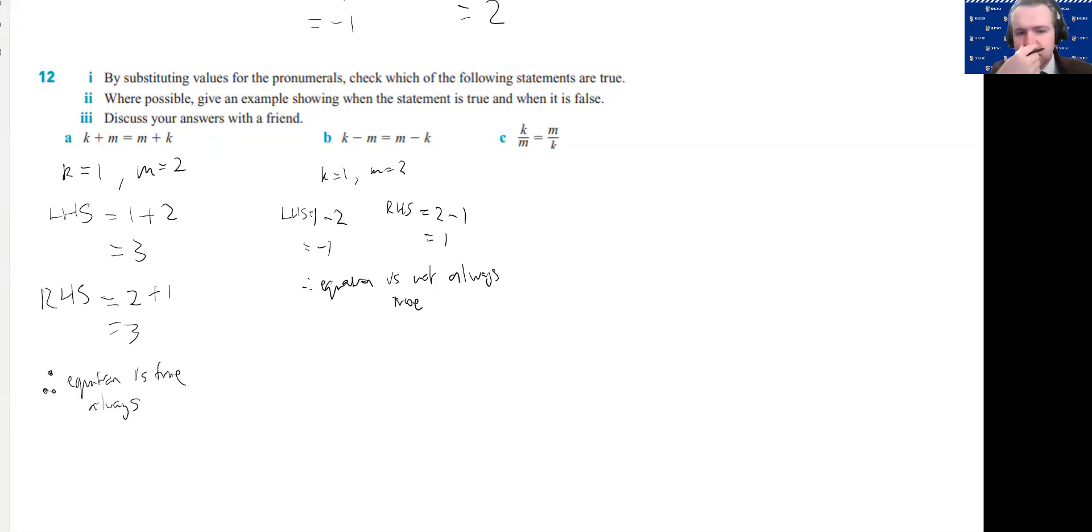Let's try a different example. What if we make k and m the same value? So we're going to make k 3 and then m equals 3. So they have the same value, which is entirely plausible. The left hand side then becomes 3 minus 3, which is 0. And the right hand side becomes 3 minus 3, which is also 0.